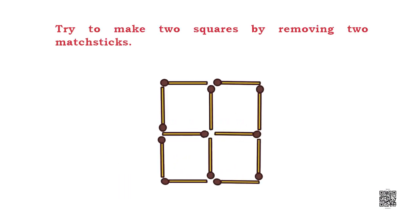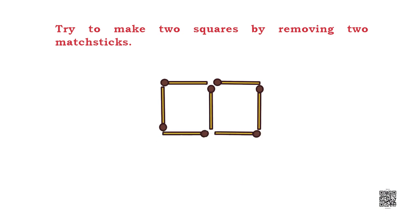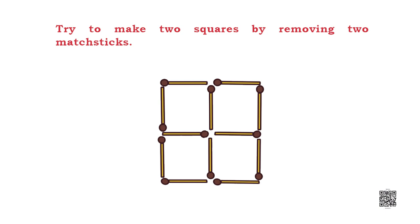There is a big square given which has been divided into four different squares with the help of math sticks. Now what you have to do is remove two math sticks to make it two. Let's try removing two math sticks from the upper side. There are two squares now — easy, isn't it?